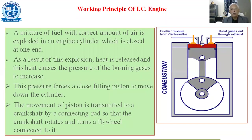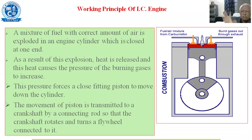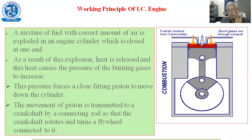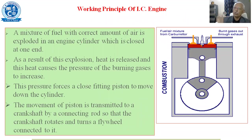This is the working principle of the IC engine, which we discussed at length. As a summary: a mixture of fuel with the correct amount is used. There are three different types of mixture strength — rich, lean, and chemically correct. Most of the time, we prefer a chemically correct mixture for stationary engines. Whenever the load fluctuates, the strength of the fuel also fluctuates accordingly.